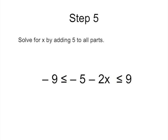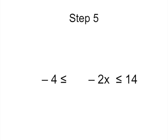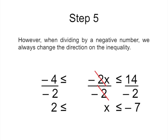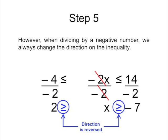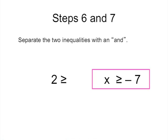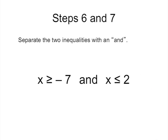Then, solve for x by adding 5 to all parts and dividing by 2 on all parts. However, when dividing by a negative number, we always change the direction of the inequality. And finally, separate the two inequalities with the word 'and.' Remember, all problems that originally contained a less than symbol will have the word 'and' in its answer; otherwise, it will have an 'or.' Always write the answer lowest value first with the letter on the left. The final solution is now complete.